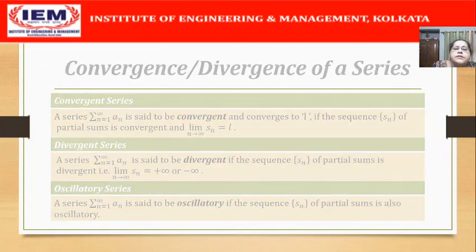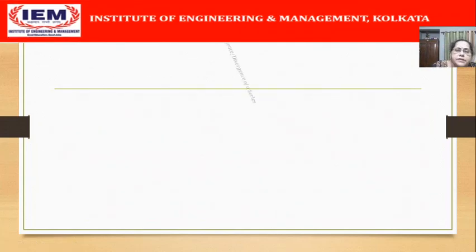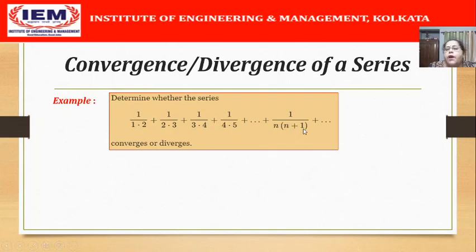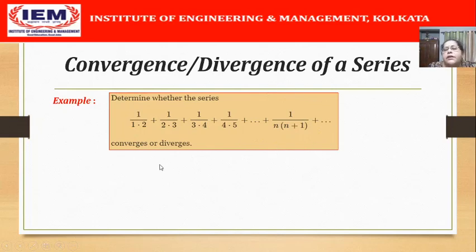Now let us see an example to understand these concepts. We have the problem: determine whether the series 1/(1·2) + 1/(2·3) + 1/(3·4) + dots, whose nth term is 1/(n(n+1)) + dots, converges or diverges. From the definition, we understand that first we need to construct the sequence of partial sums S_n and then test the convergence of that sequence.